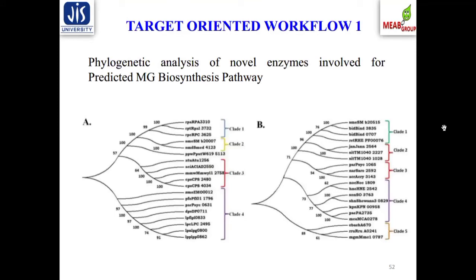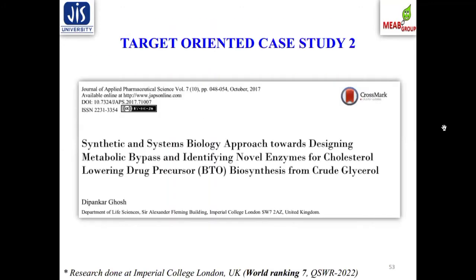A phylogenetic analysis workflow allows classification of different enzyme classes — clade 1, clade 2, clade 3 — to identify which enzyme is closely associated with a known enzyme of known function. Out of perhaps 100 candidate enzymes, this allows selection of the most suitable enzyme to become part of the reconstructed metabolic pathway.